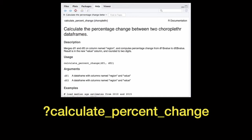If you give calculate_percent_change two data frames in this form, it will return a third data frame. The data frame it returns will have the same regions as the data frames you gave it, but the value column will represent the percent change between the value columns of the two data frames.